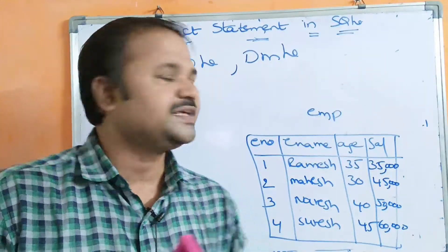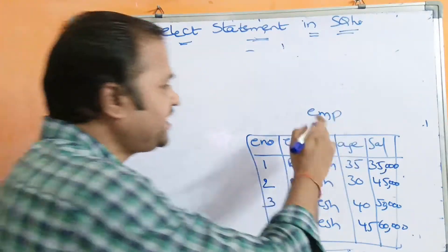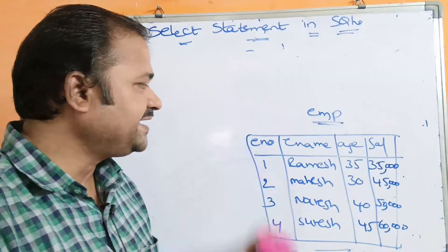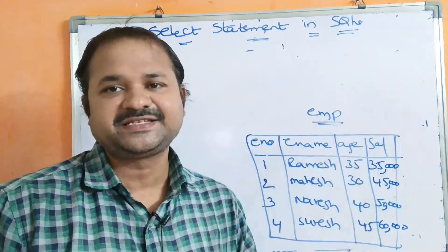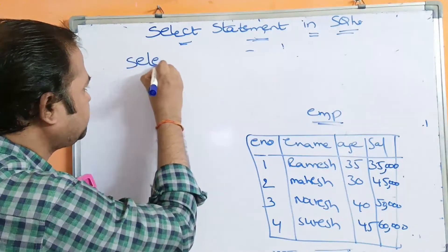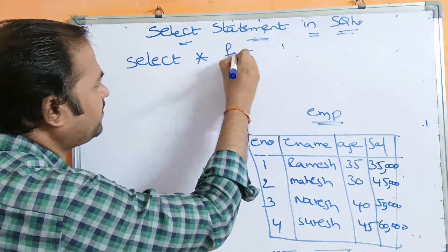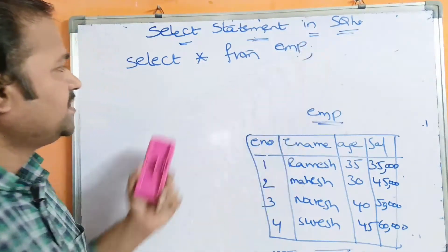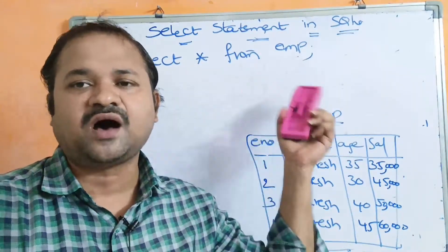Now let us see the advantages of the SELECT command. Here we have a table called the employee table. The employee table contains four columns: employee number, employee name, age, and salary. Let us write some examples based on the SELECT query. The first example is: SELECT * FROM EMP. Here, the star specifies all.